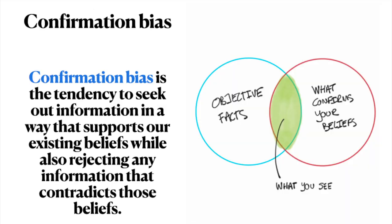Confirmation bias is the tendency to seek out information in a way that supports our existing beliefs, while also rejecting any information that contradicts those beliefs. Confirmation bias is often unintentional but still results in skewed results and poor decision-making.